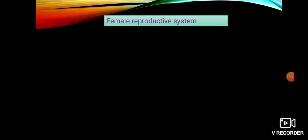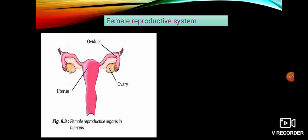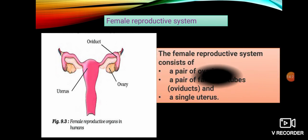Now we move to the female reproductive system. We had covered the male reproductive system with its different organs and functions, and also the structure of the male gamete. Now we move on to the female reproductive system.